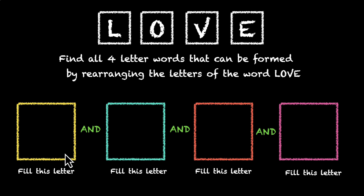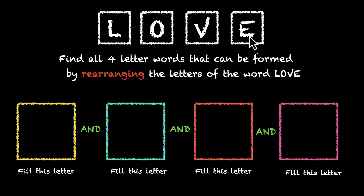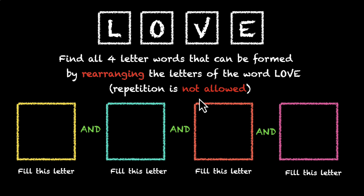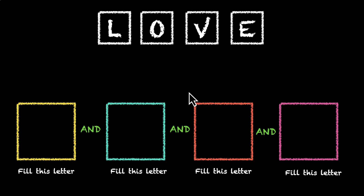So here's an important word: rearranging. When you're rearranging the letters, you're only playing with one L, one O, one V and one E. This means repetition in this case is not allowed. It's not mentioned here, but this is something you can figure out from the word rearranging — that in this case, repetition is not allowed.